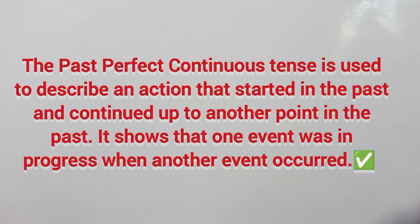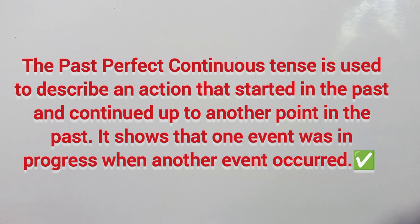The Past Perfect Continuous Tense is used to describe an action that started in the past and continued to another point in the past. It shows that one event was in progress when another event occurred. In the past, one action continues, and it shows that one event is in progress when the second event occurs.